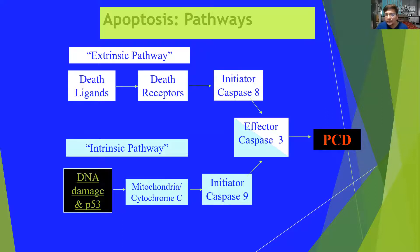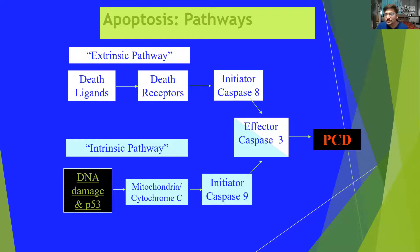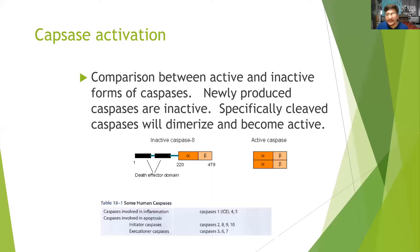The intrinsic pathway usually operates in the mitochondria. DNA damage or activation of p53 protein can cause mitochondria to release cytochrome c, which is a soluble protein. Cytochrome c is normally part of the electron transport chain, but once it is released into the soluble form it activates the initiator caspase-9, and finally the effector molecule caspase-3 gets activated, which leads to programmed cell death.